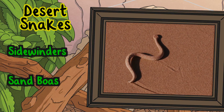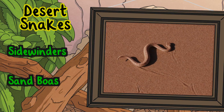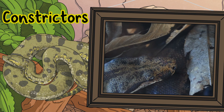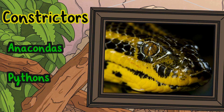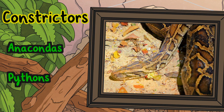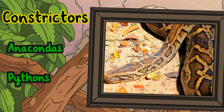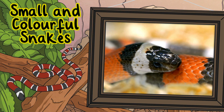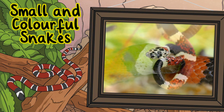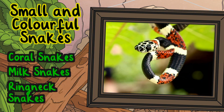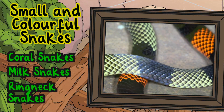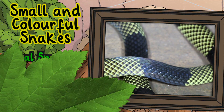Desert snakes include sidewinders and sand boas. Constrictors: some snakes kill prey by squeezing them tightly; these include anacondas and pythons. Small and colorful snakes: some snakes are small and known for their bright colors, including coral snakes, milk snakes, and ring-neck snakes.